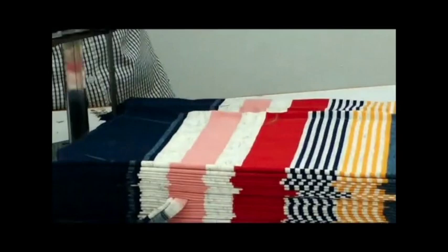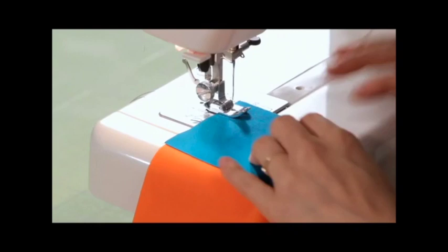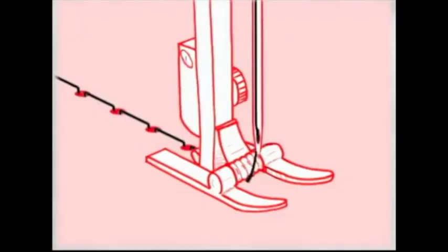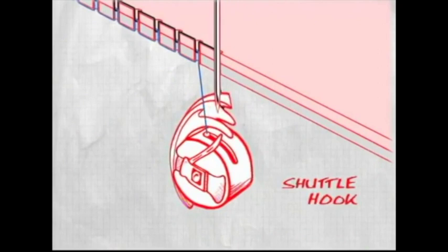Sew the pieces together with two threads. One thread in a needle comes down and makes a loop. The second thread goes through the loop to make a stitch. Stitches hold clothes together.